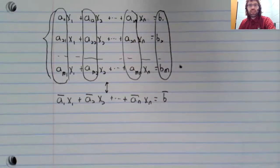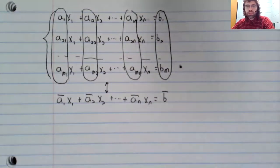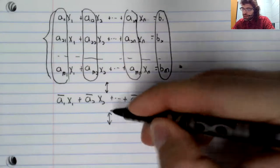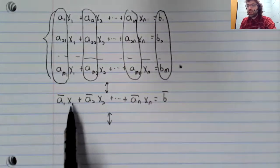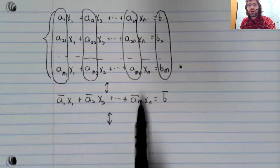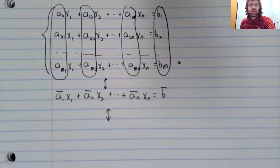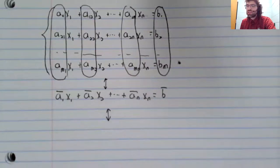And what we now have from section 1.3 is that a linear combination of vectors like this can be thought of as a matrix times a vector.